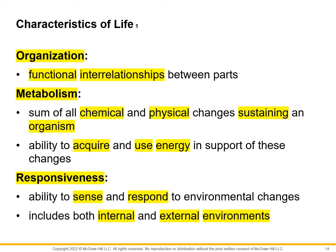Let's look at a few other definitions. First is organization — in terms of anatomy and physiology, this means the functional interrelationships between parts. An example is different tissues working together to create an organ, or different organs connected together to perform a specific function. Different things working together — that's what we mean by functional interrelationships.